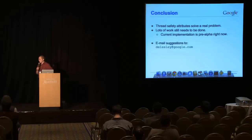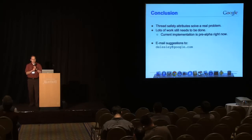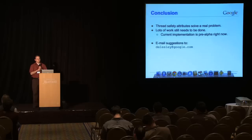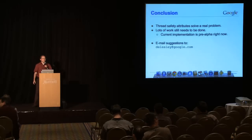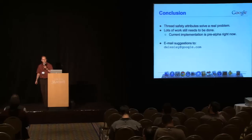Okay. So, hopefully, I've convinced you that thread safety attributes, maybe solve is too strong a word, but assist in dealing with a real problem. I think there's a lot of work that needs to be done right now. The current implementation is very much pre-alpha. So, please don't run out and add these to your million lines of code, and then email me tomorrow and say, it doesn't work. I know it doesn't work. I have my own million lines of code that we're going to try to get it working on first, and then I'll tell you guys when it does work. But I would love to hear any suggestions that you email me. Any questions?